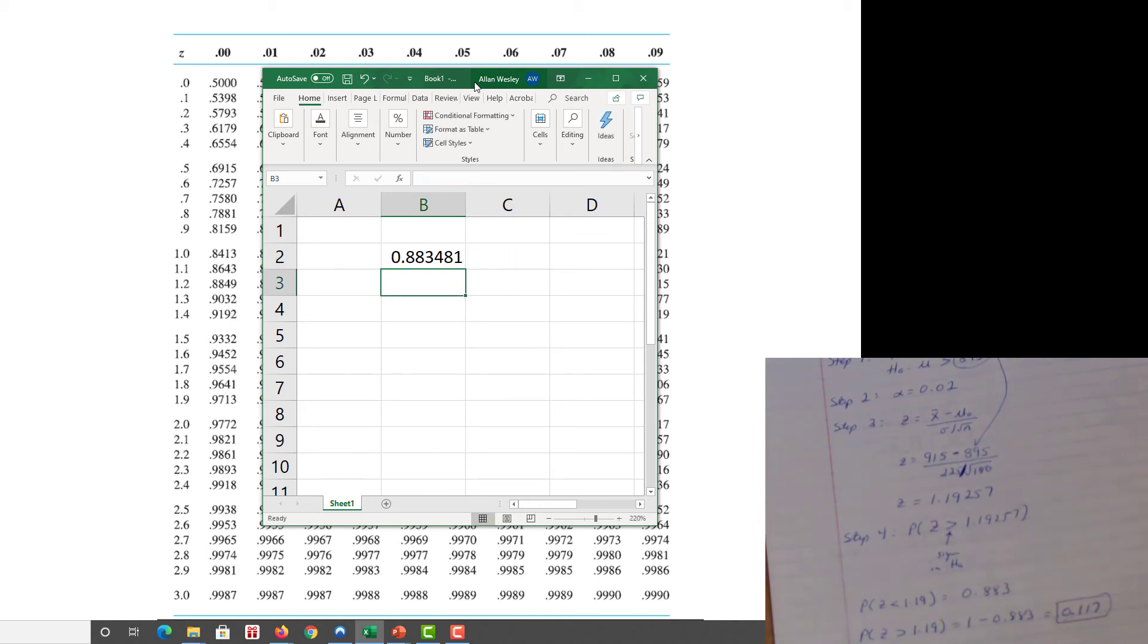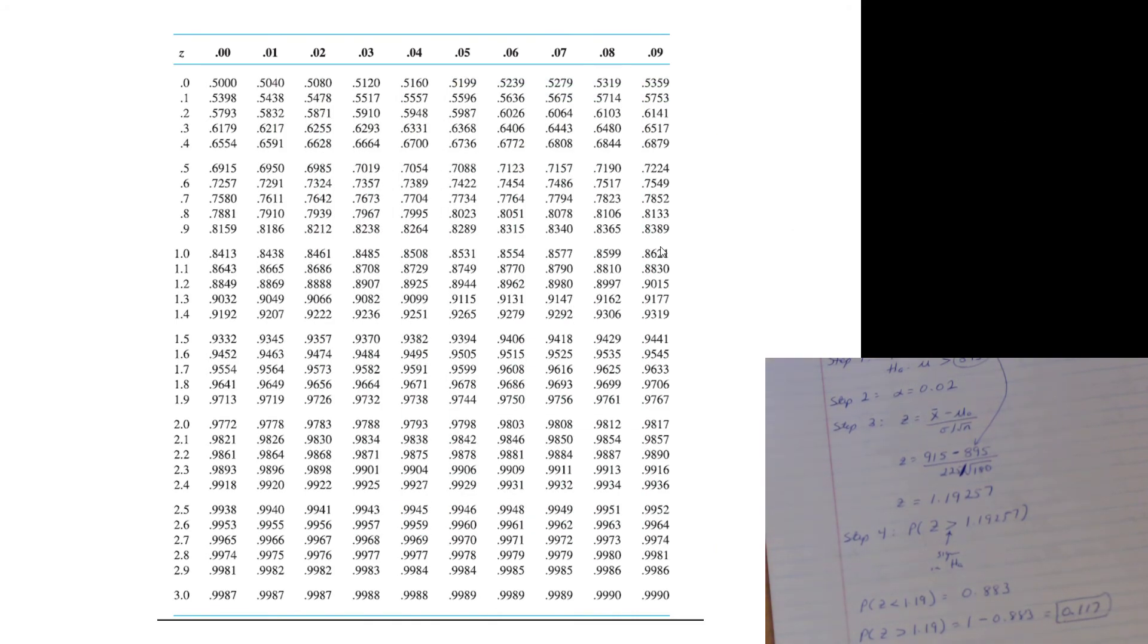That gets me the less than, just like we had before. That's no different than what we look up in the tables. I still have to find the complement and 1 minus that particular cell, and I get to the same spot. Both pretty quick, right? Both pretty quick and relatively painless.